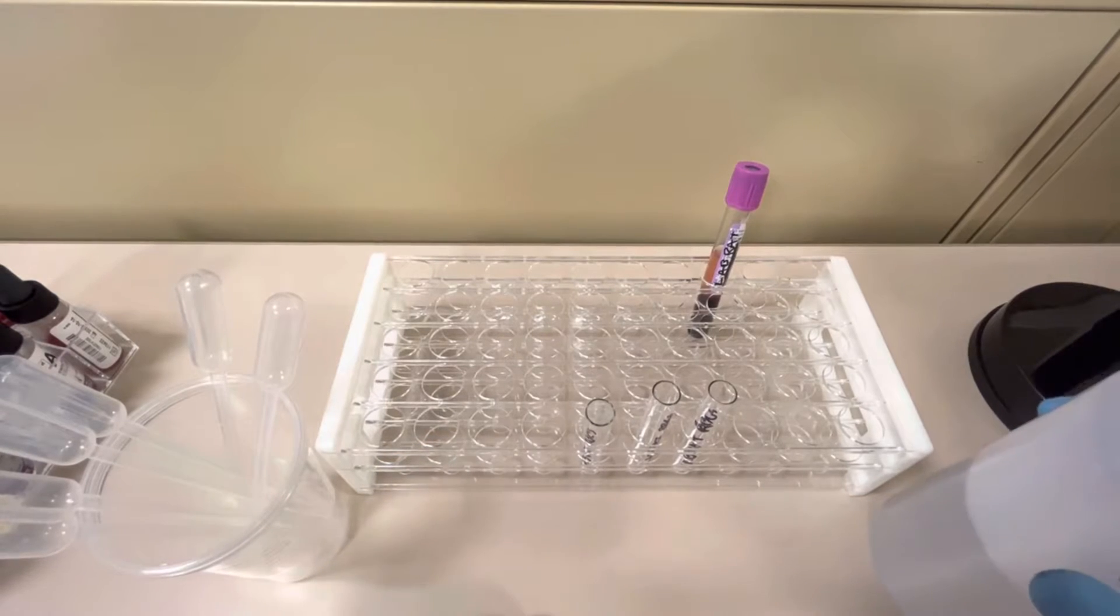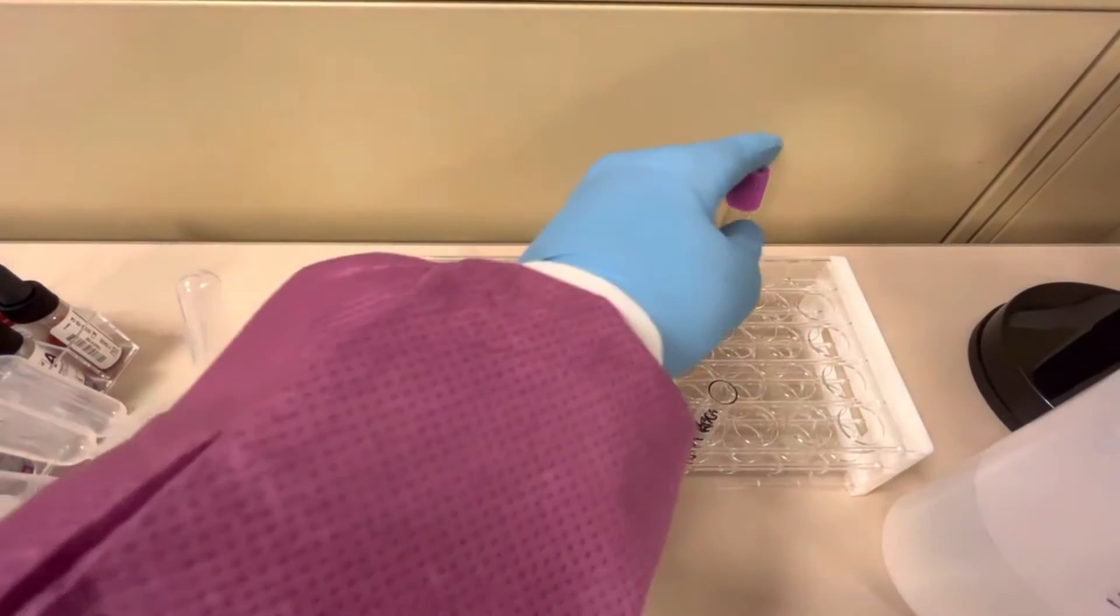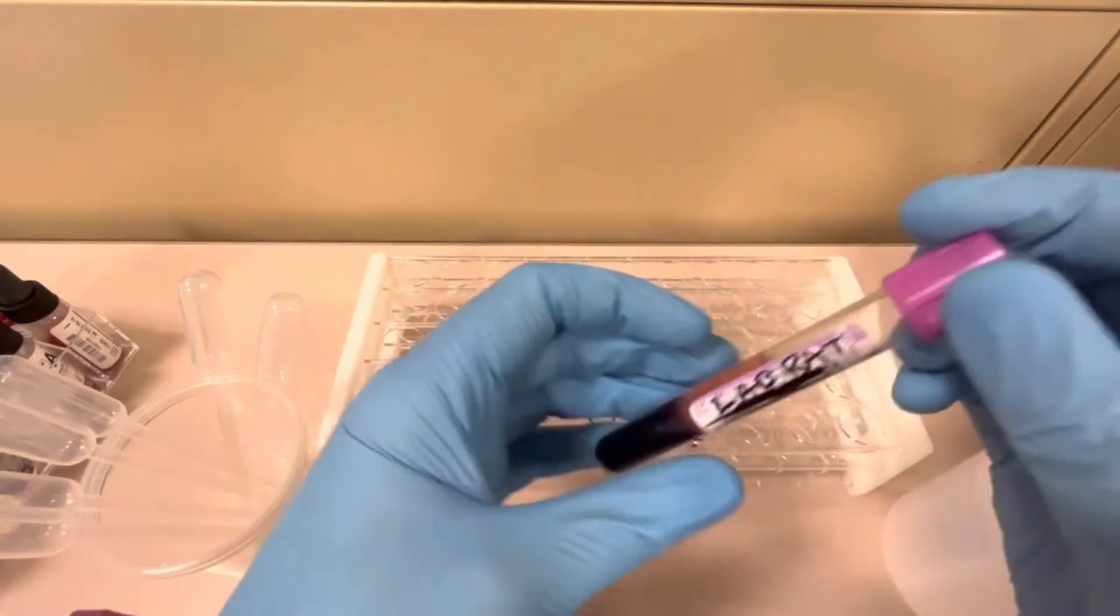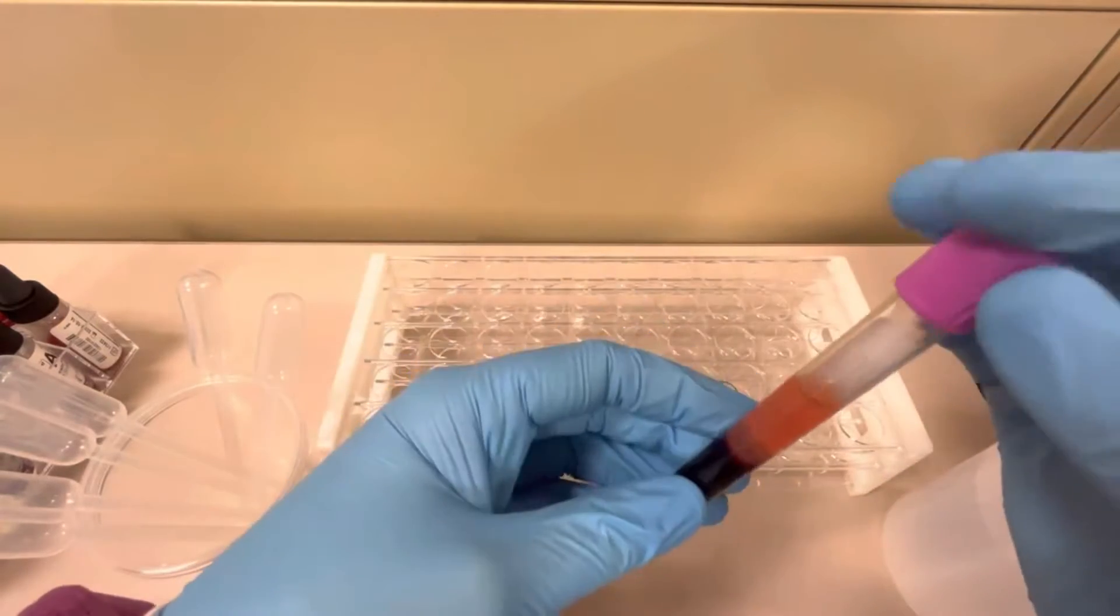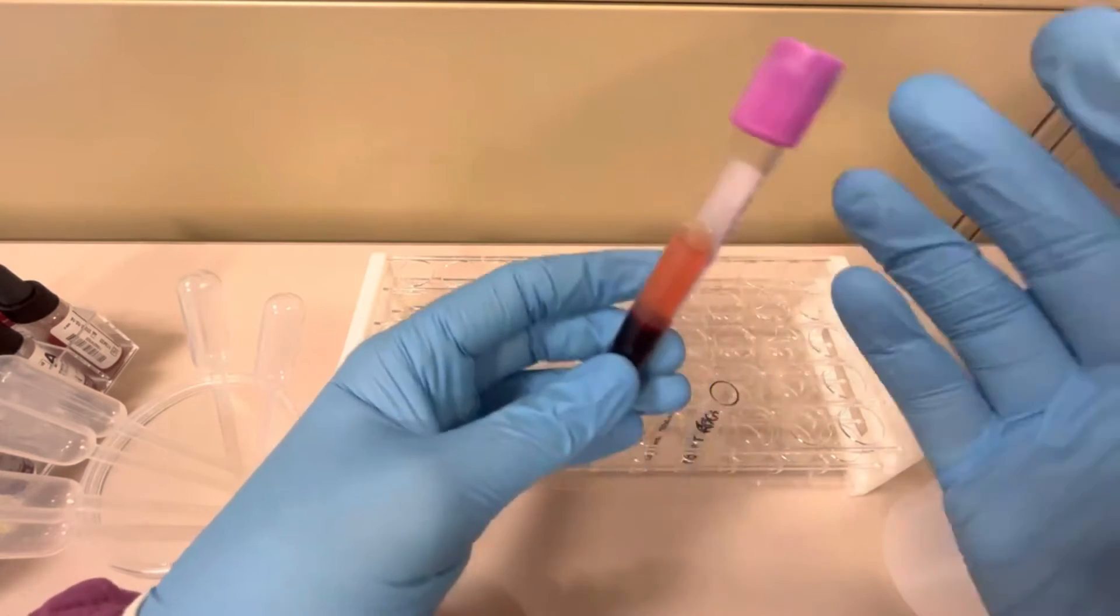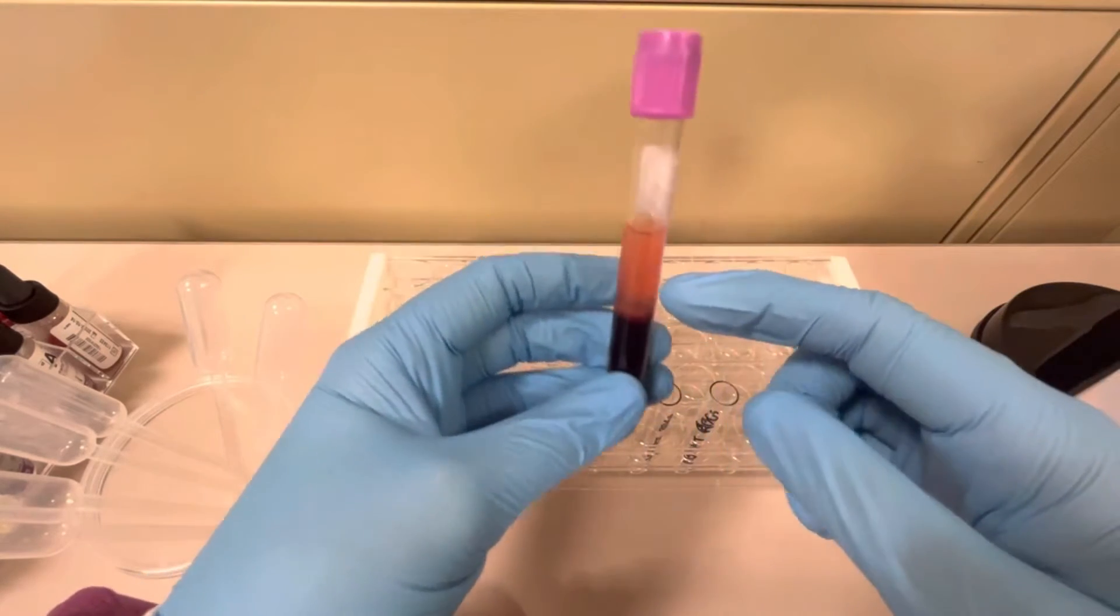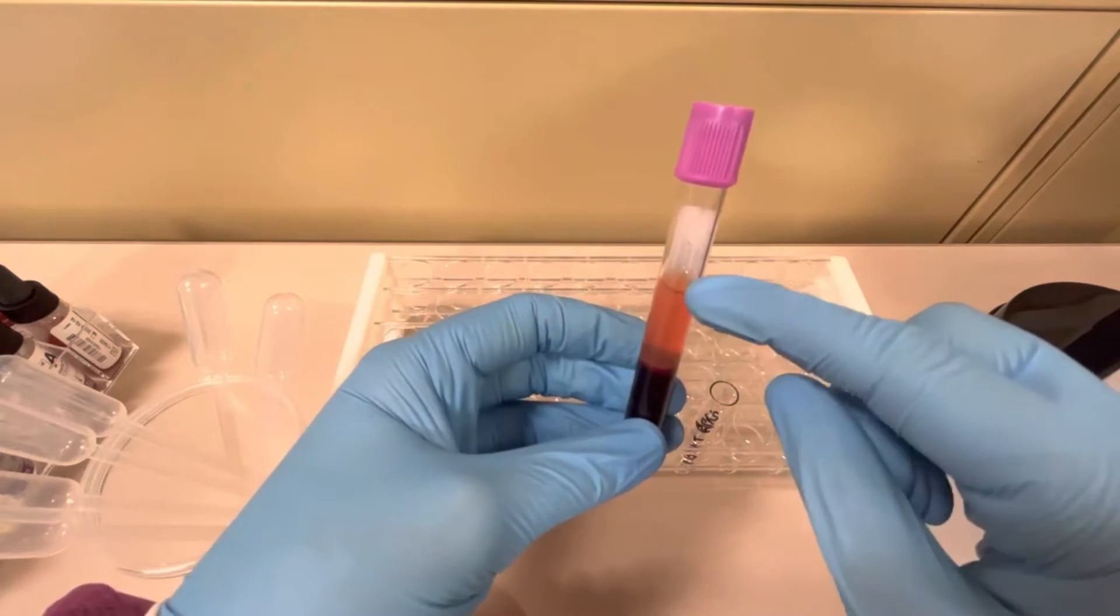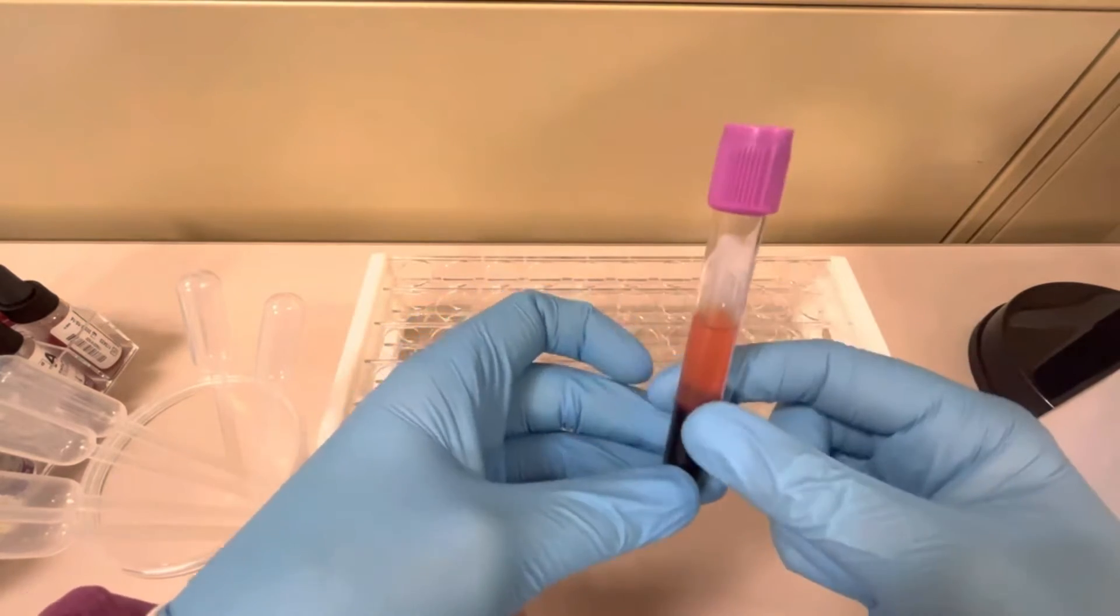So I'm going to show you how to do it. What I've done here is I've gotten my supplies ready. First I have a properly identified patient sample. It's named Lab Rat. This is actually a phlebotomy student of mine that donated their blood for this procedure. It's properly spun so this is the plasma on top and the red blood cells here down at the bottom.